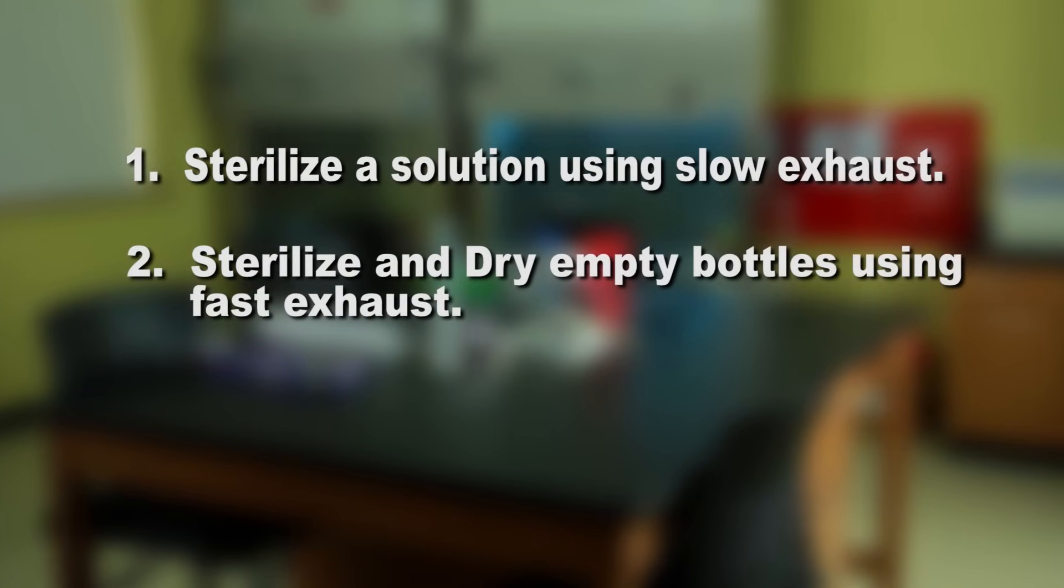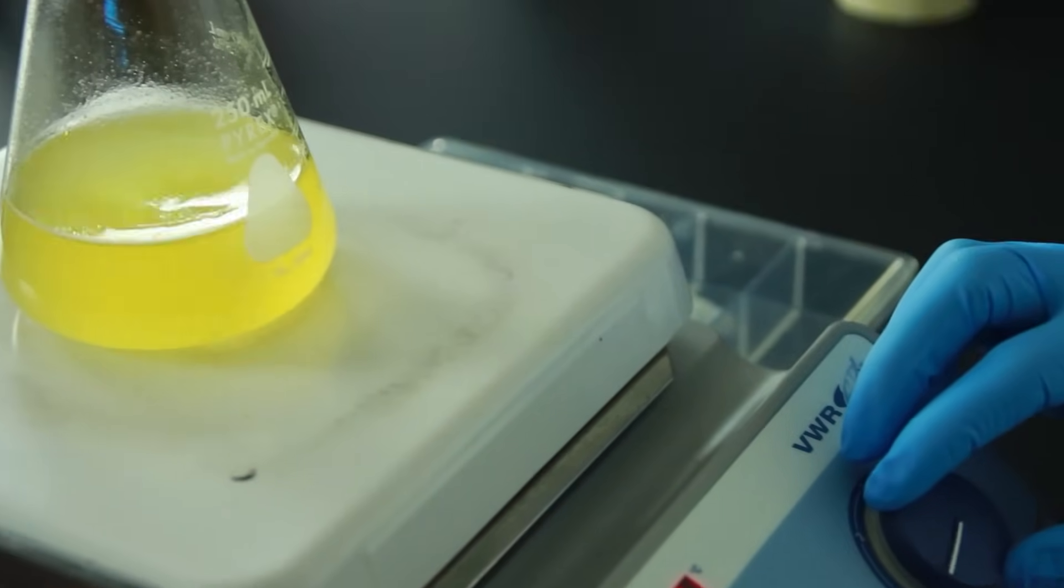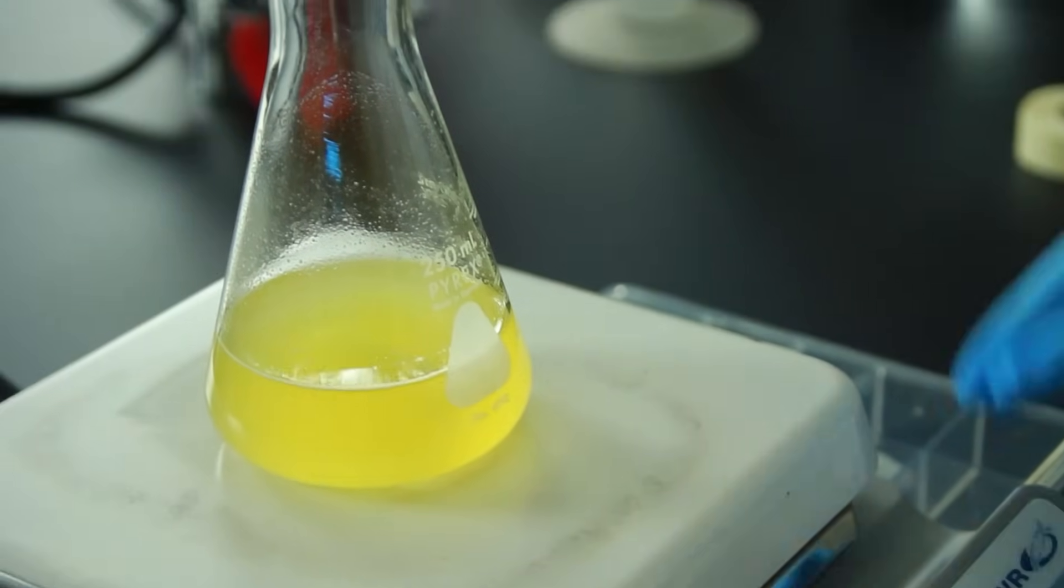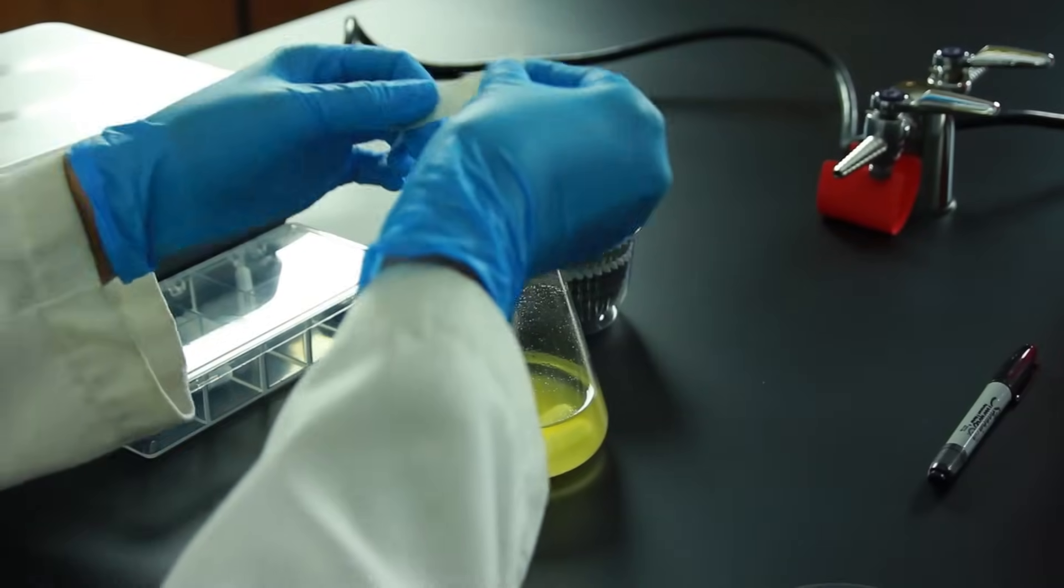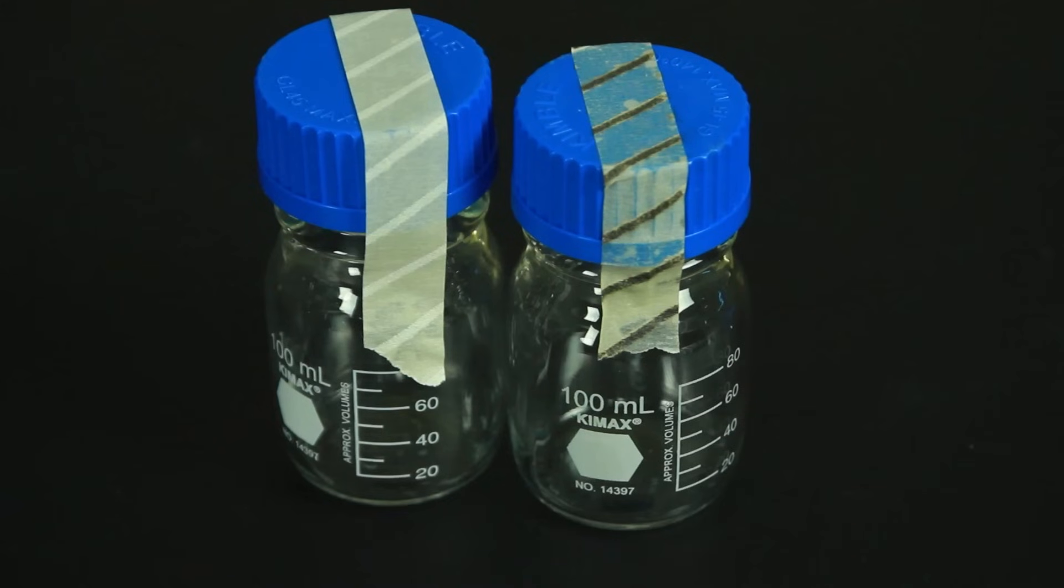We need to sterilize this flask containing an agar bacterial media. Cover the top with foil and place a piece of autoclave tape over the foil. Autoclave tape looks like regular masking tape. The difference is that it has a special ink that causes black diagonal lines to appear when exposed to high temperature.